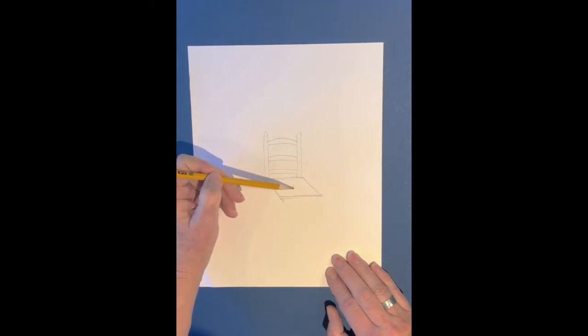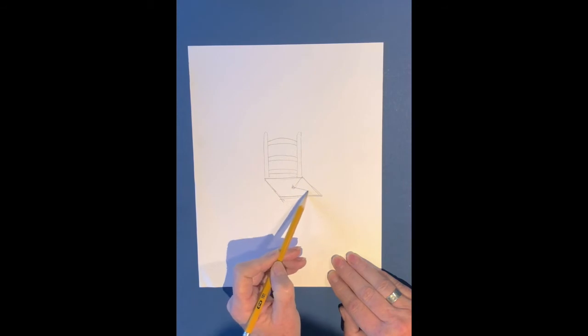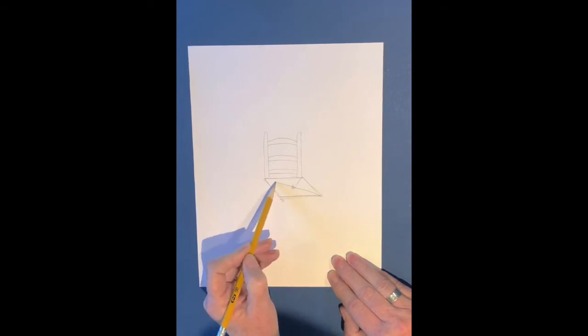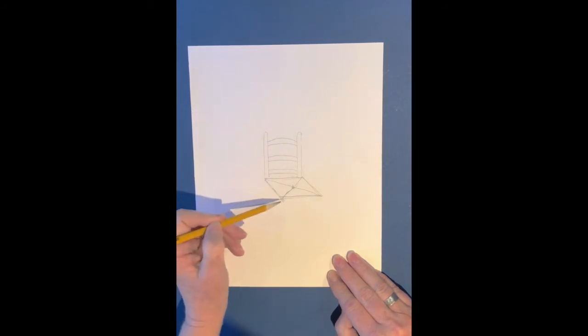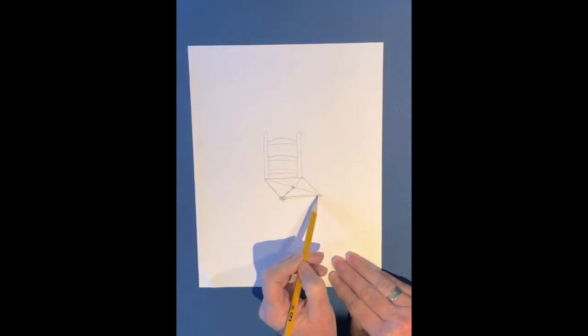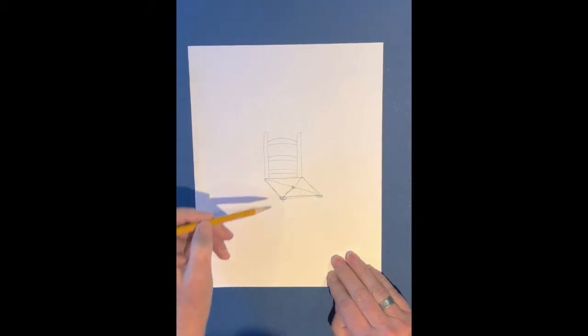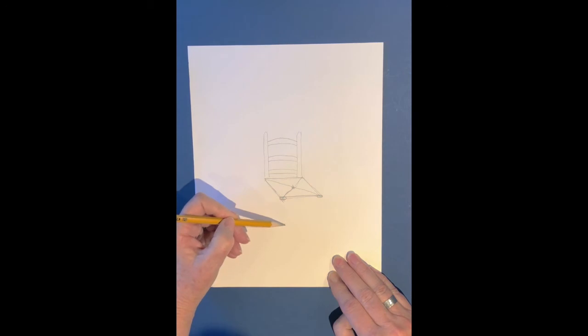And now we're going to divide the seat of the chair into four triangles because this is a woven straw chair. And then we're going to make a very shallow ellipse or oval in the front and start making our legs. So make sure that your legs are parallel to the back of the chair.